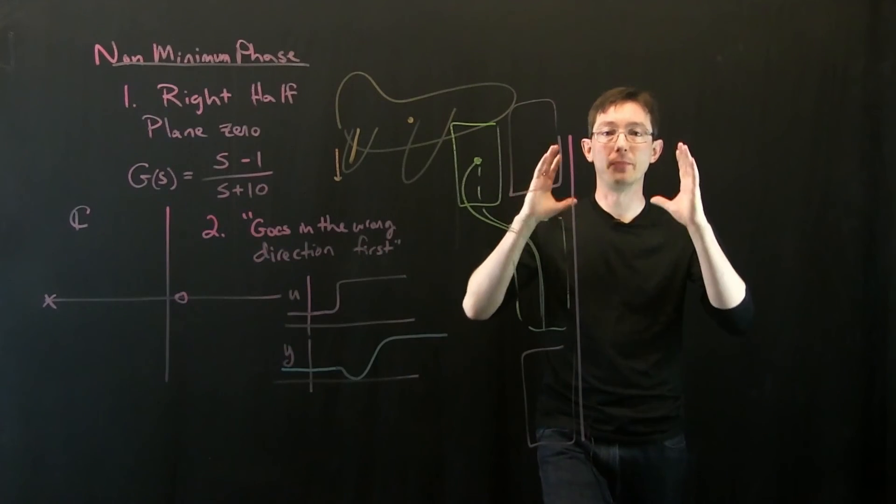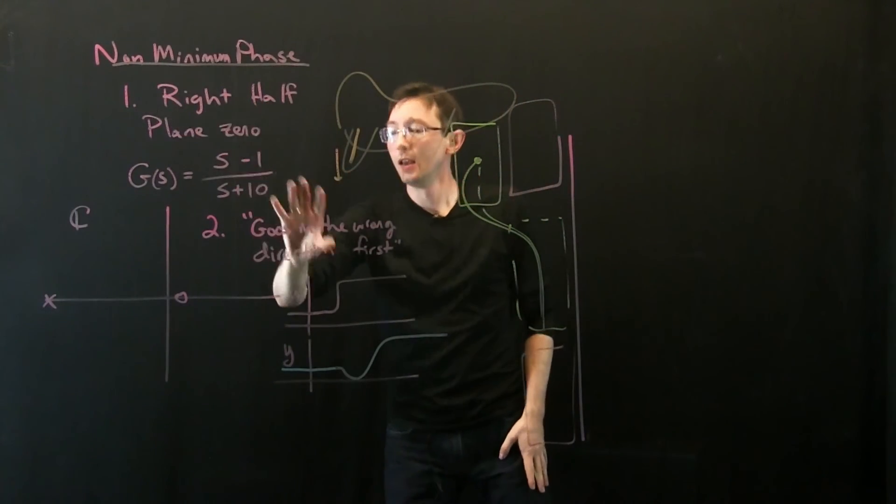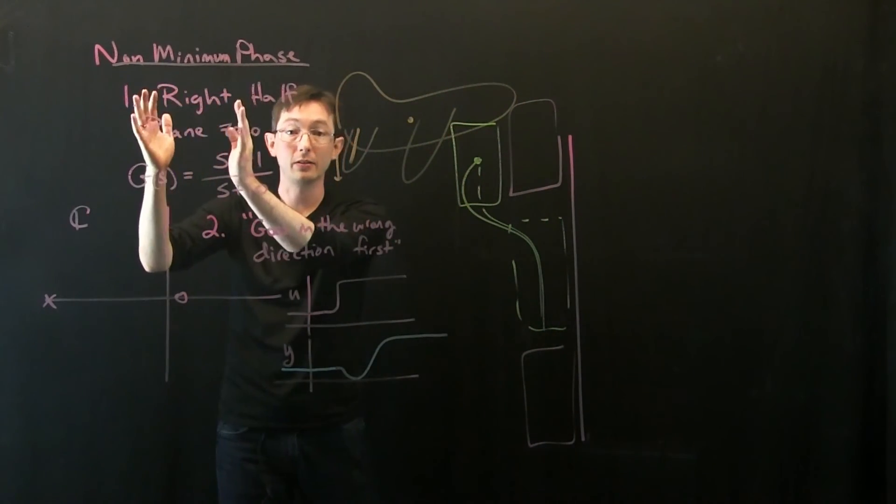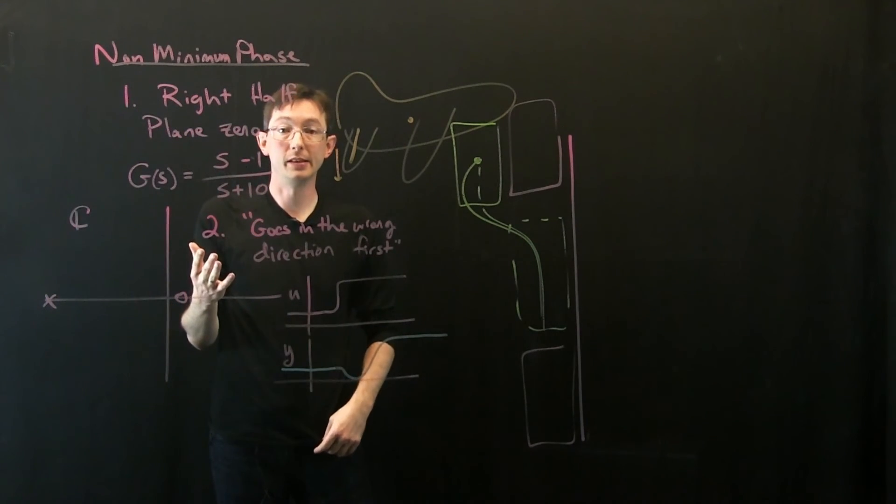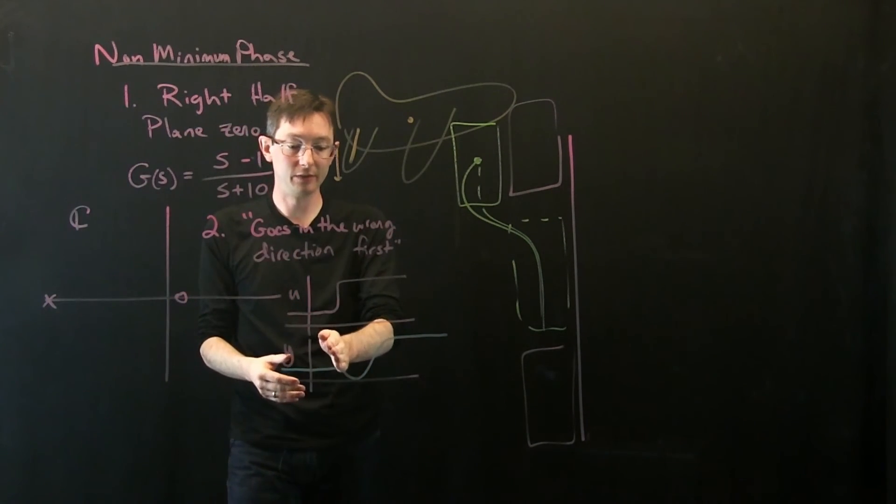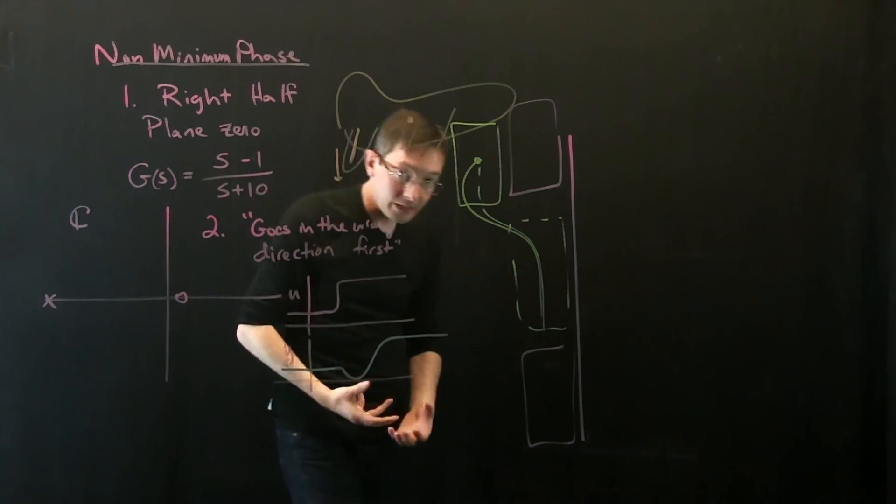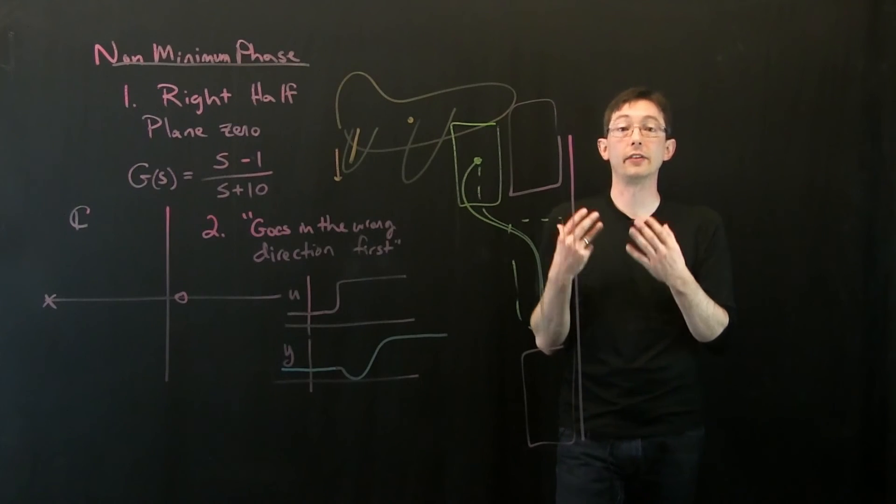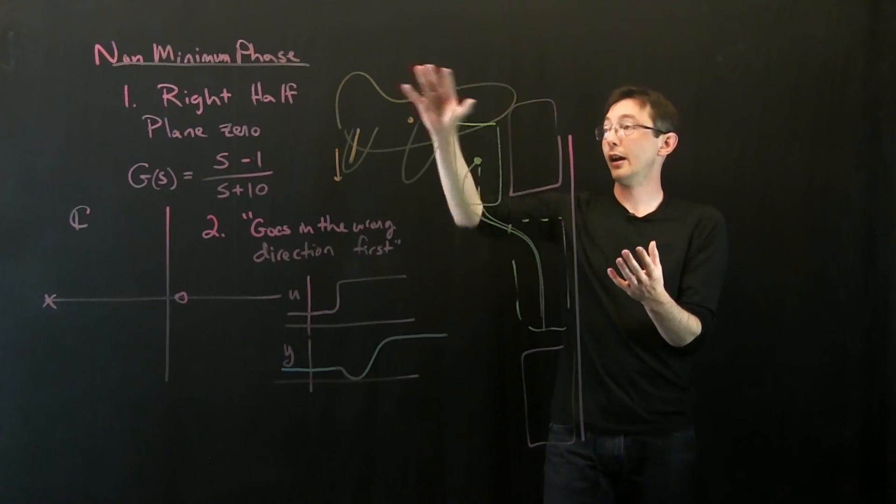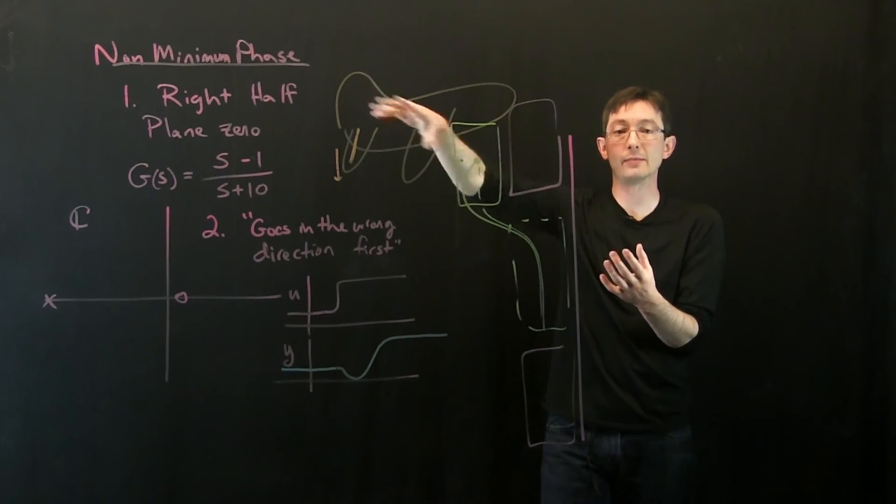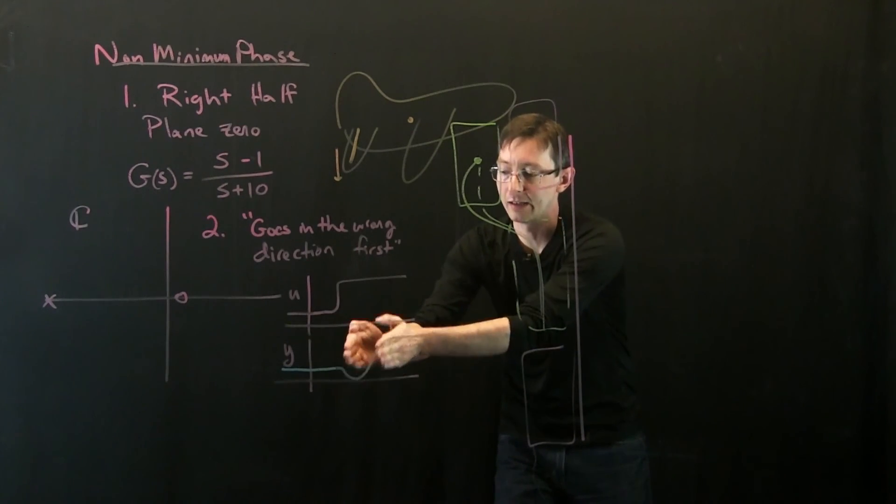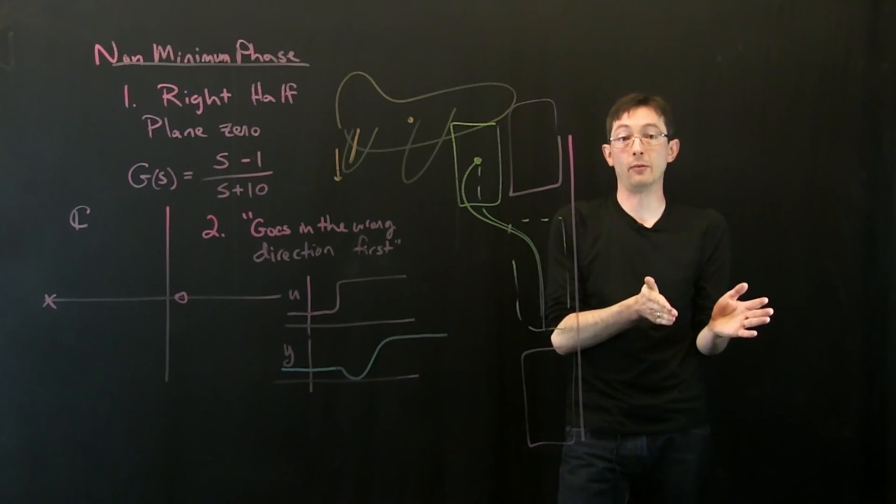Okay? So that's the physical intuition. Non-minimum phase has these two, you know, this mathematical characterization of having a right half plane zero, and this physical characterization of dipping in the wrong direction before finally going in the right direction. And there are some fundamental physical limitations on the control that you can achieve for these non-minimum phase systems because you can think of this kind of like a little time delay before you get what you want.